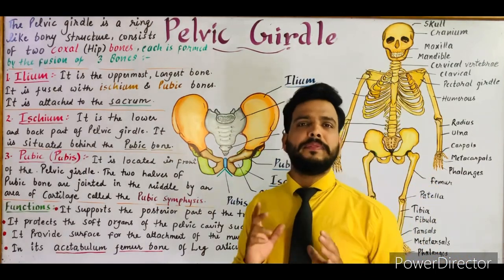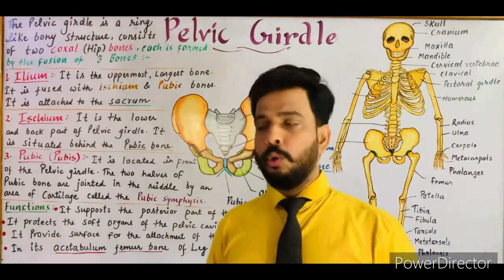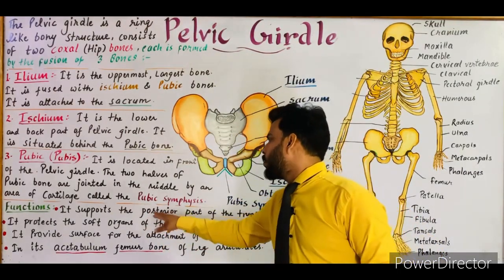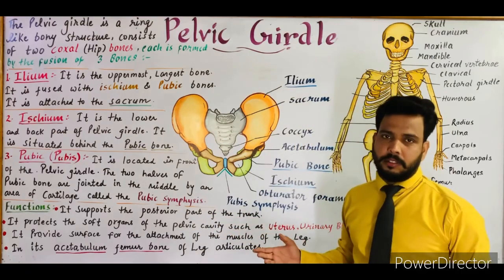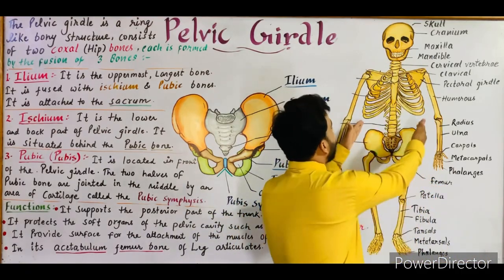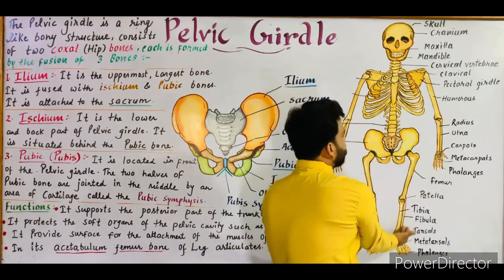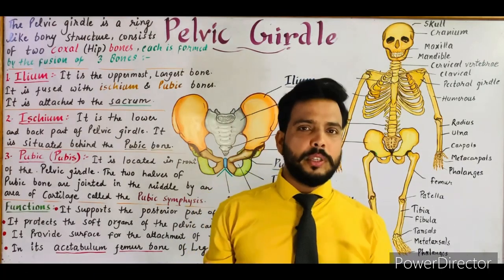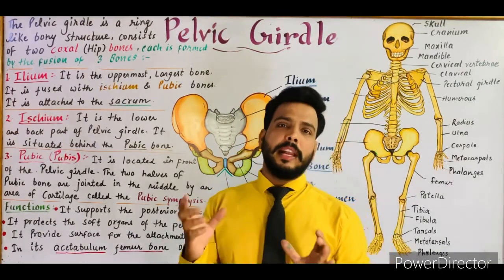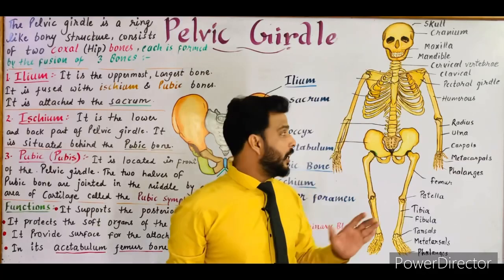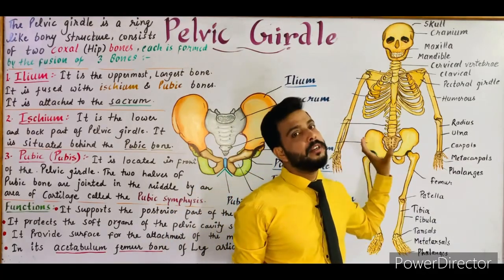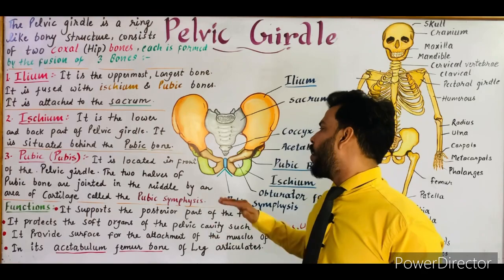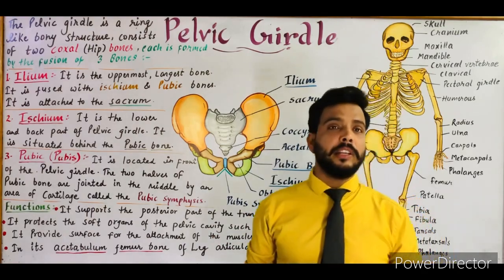Now for the functions of the pelvic girdle. Function one: the pelvic girdle supports the posterior part of the trunk — the posterior part of the trunk is formed by the pelvic girdle, and the legs are attached to it. Function two: it protects the soft organs of the pelvic cavity.